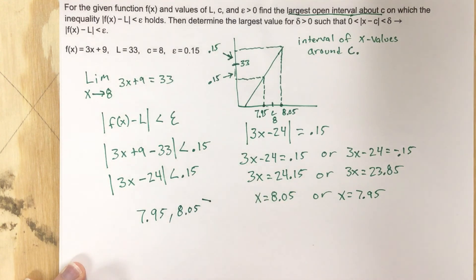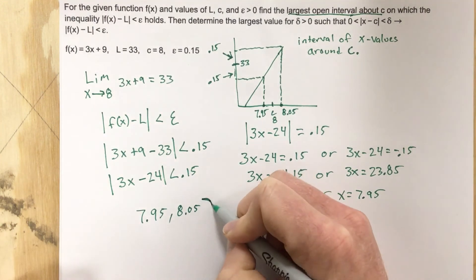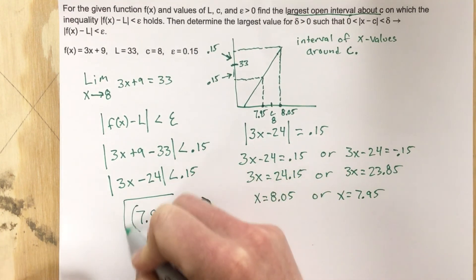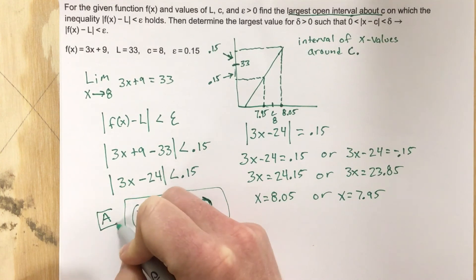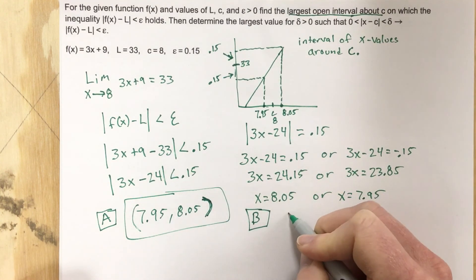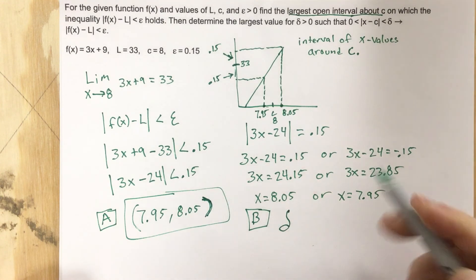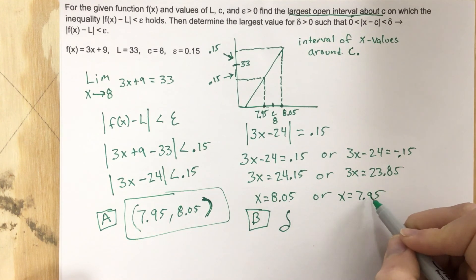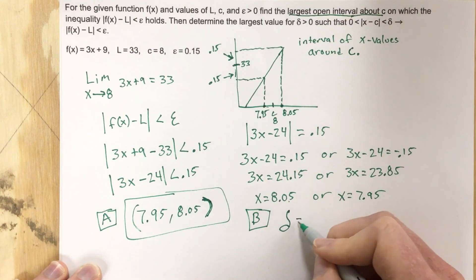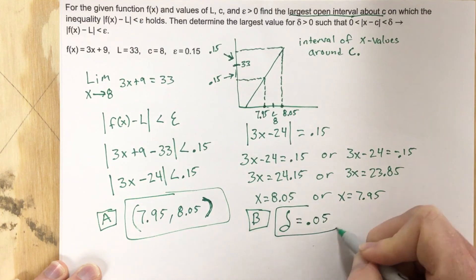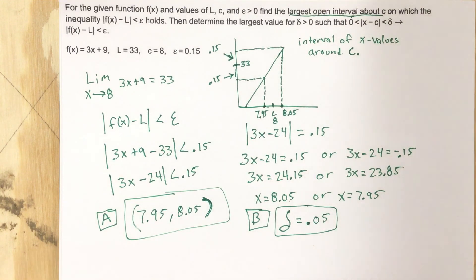We use parentheses since the interval does not include the endpoints — that's part A. Part B is the delta value. We take 8.05 - 8 or |7.95 - 8|, and we get the same number: 0.05. Because this is linear, we get that same delta on both sides. If it were a curved line, as in a previous problem, that would not be the case.